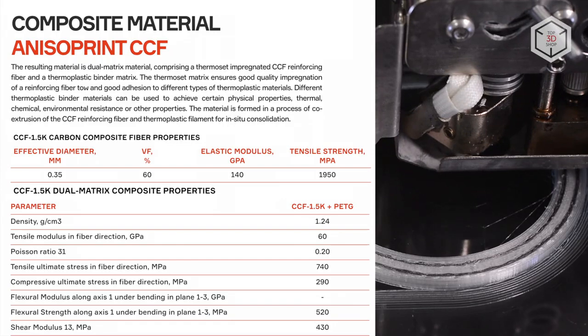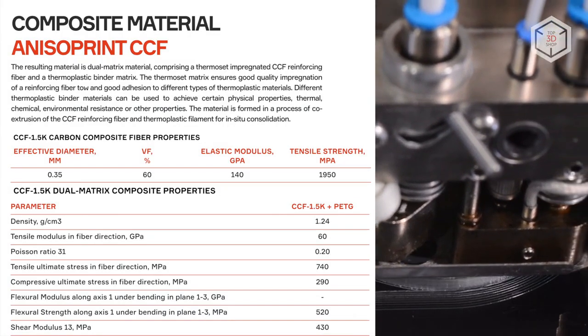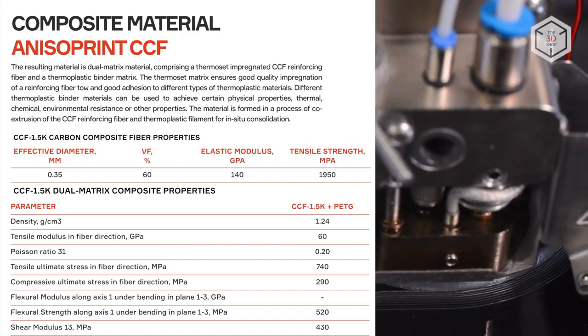Composite carbon fiber is a proprietary development of the company. Its strength characteristics are two times higher than that of aluminum, and it weighs at least two times less.